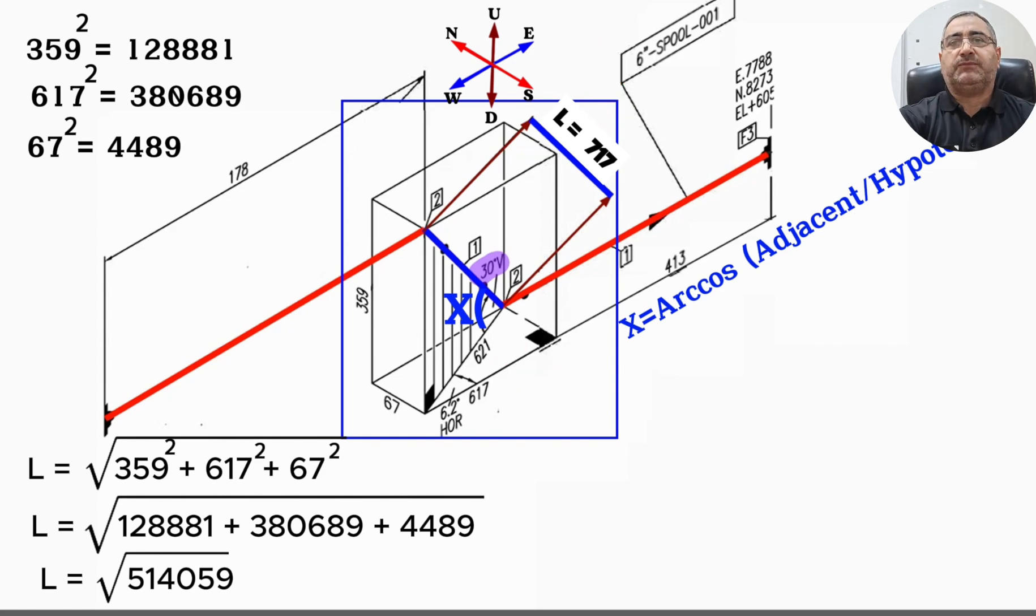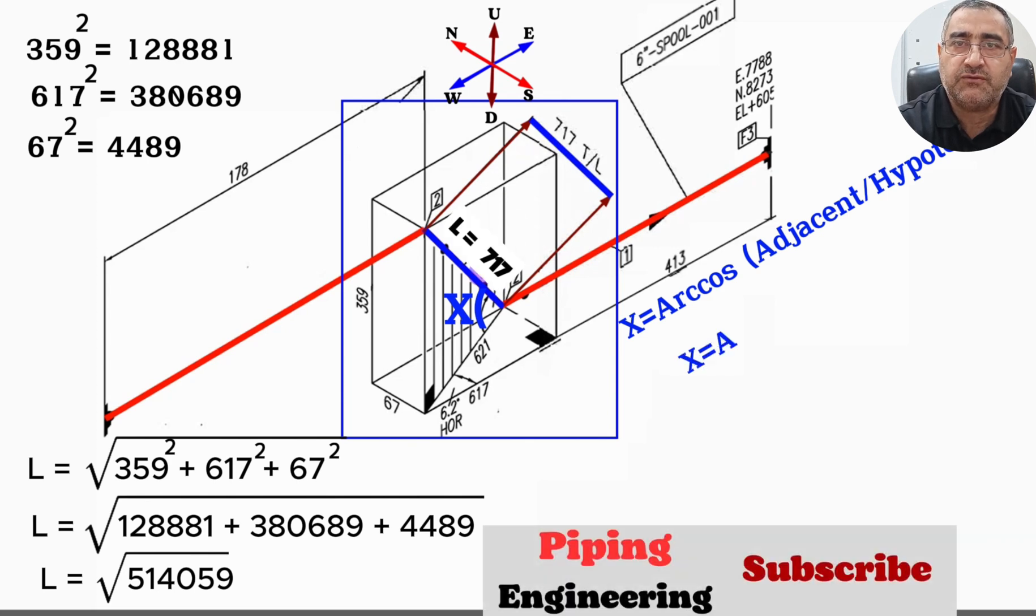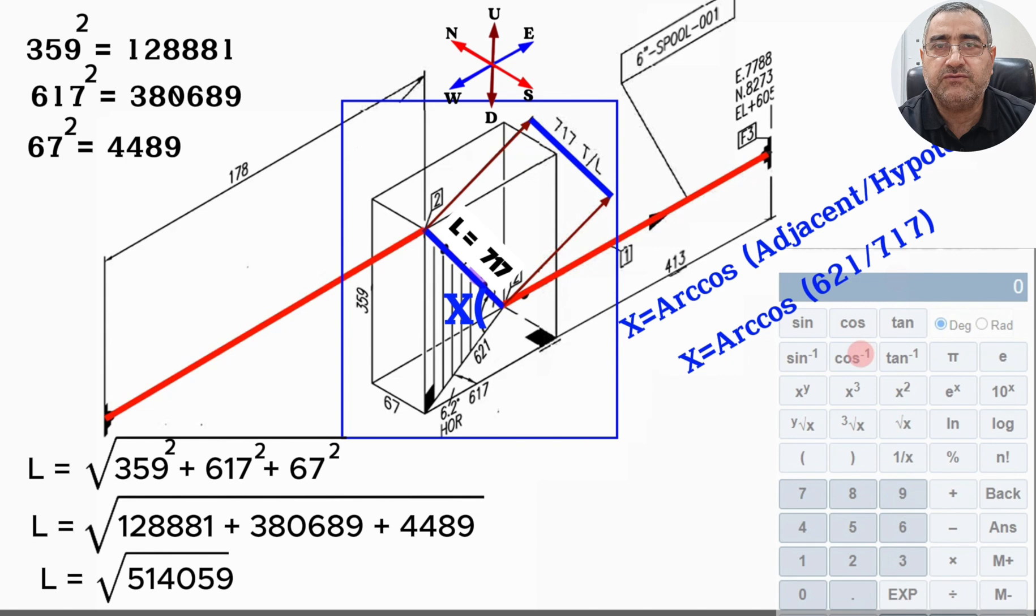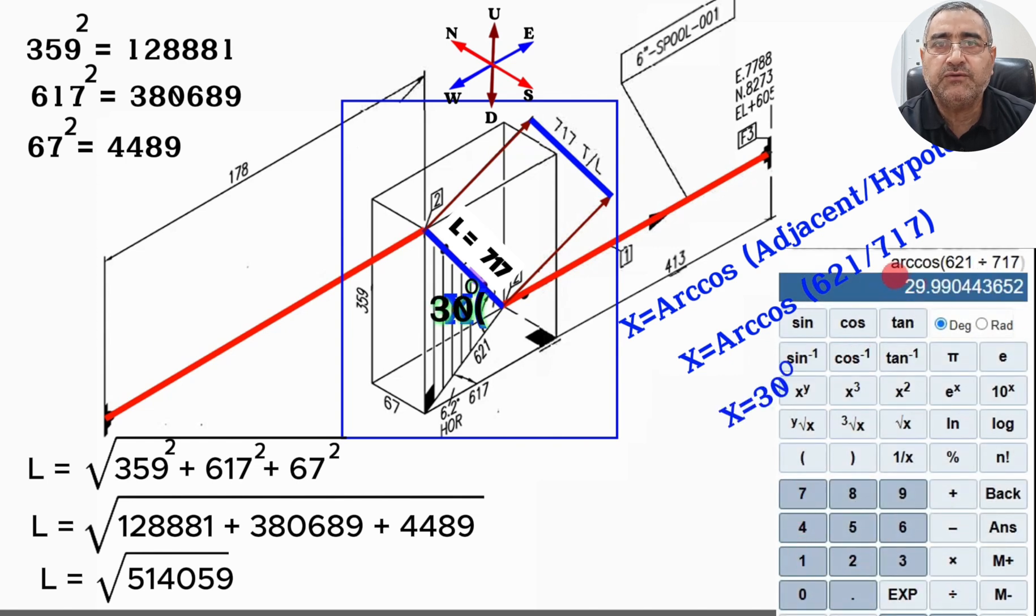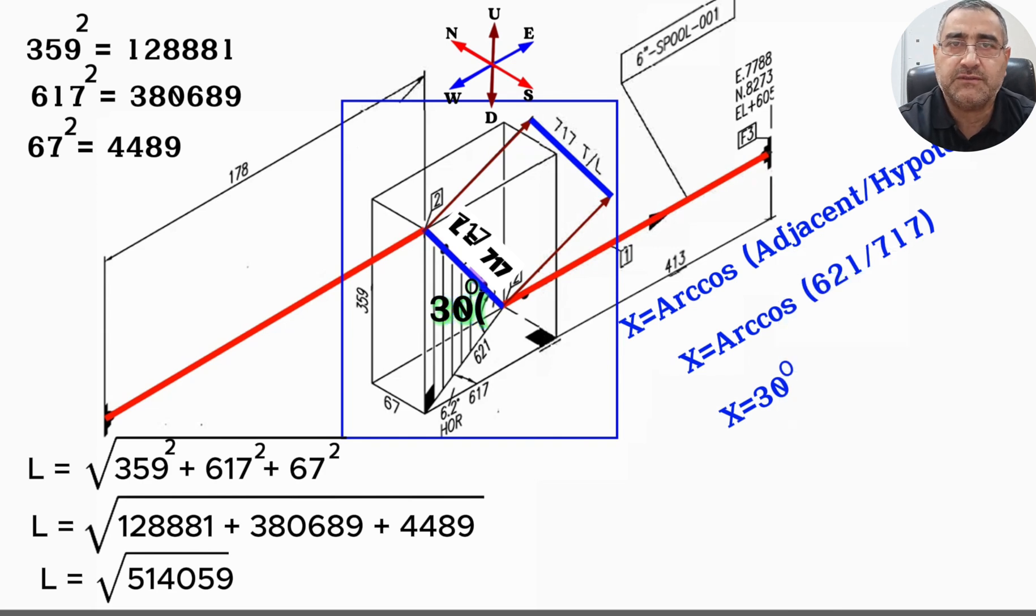We substitute the dimensions from the isometric drawing into the formula and proceed with the calculation. The angle X will equal the arc cosine of 621 divided by 717. Using a scientific calculator, we find that arc cosine of 621 divided by 717 equals approximately 30 degrees. So in this production isometric drawing, the 30-degree elbow size is correct. We applied the method learned earlier in the video to the fabrication work drawings and verified the accuracy of this method.